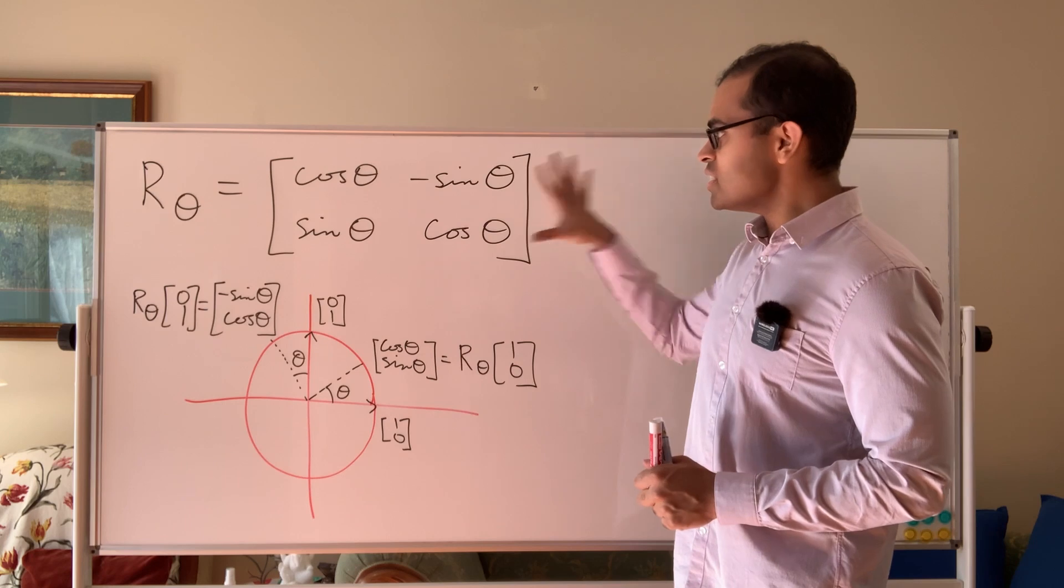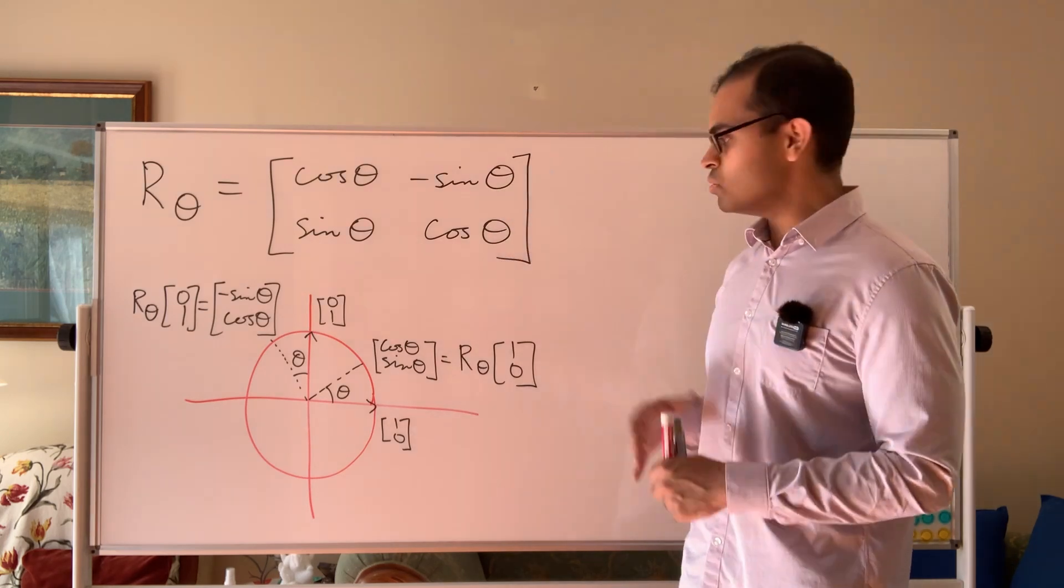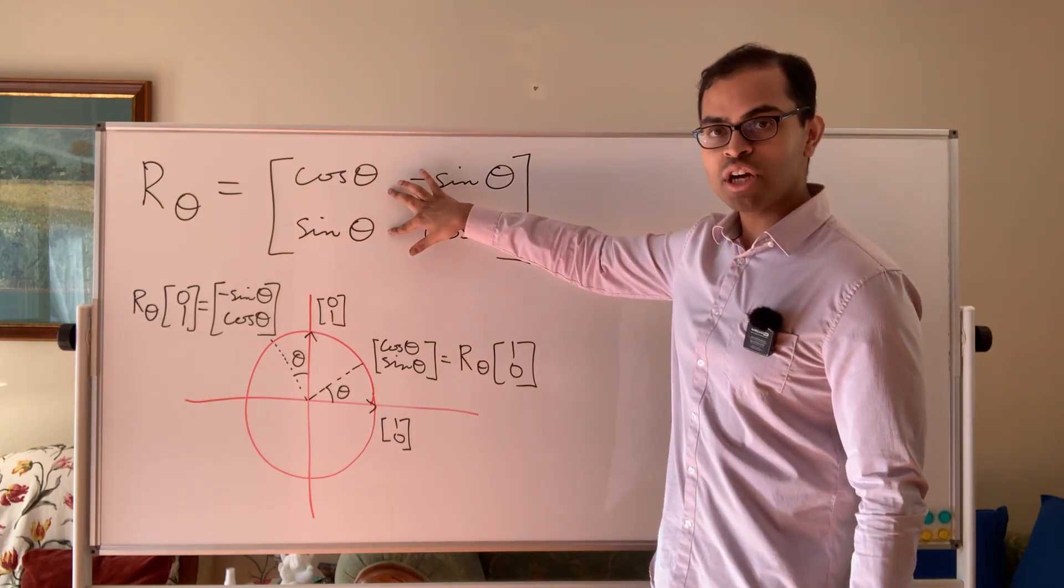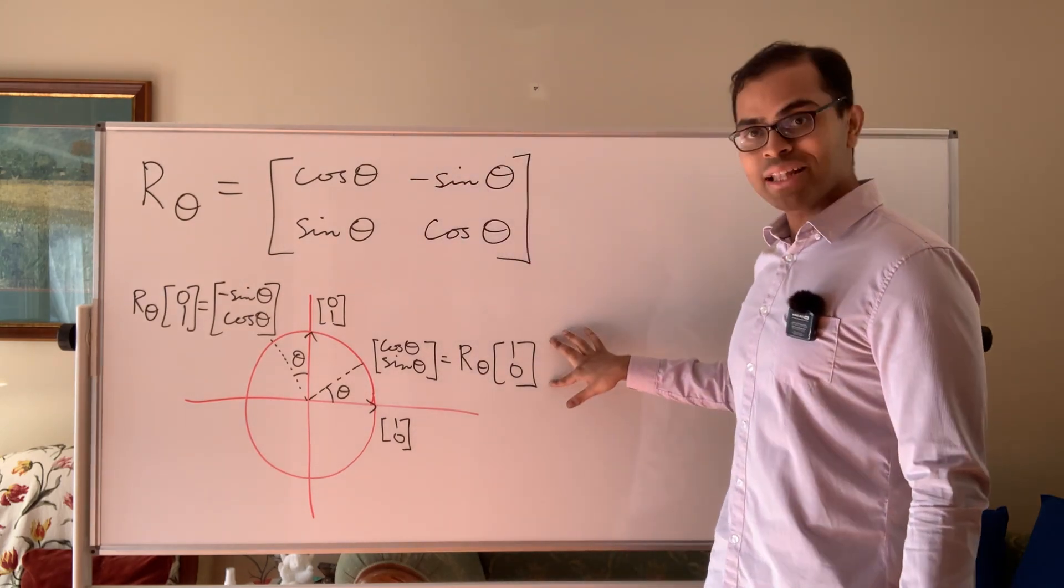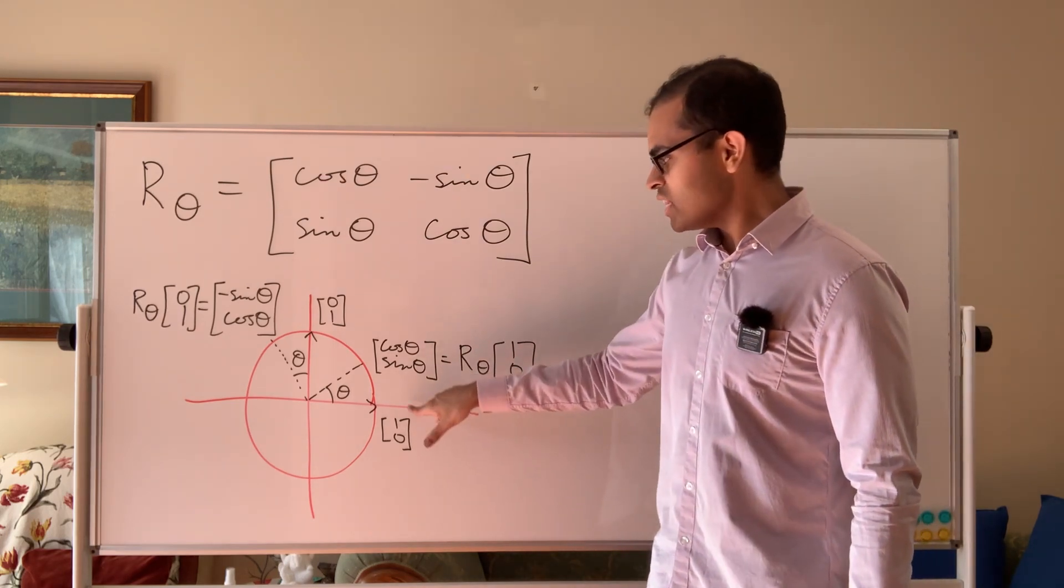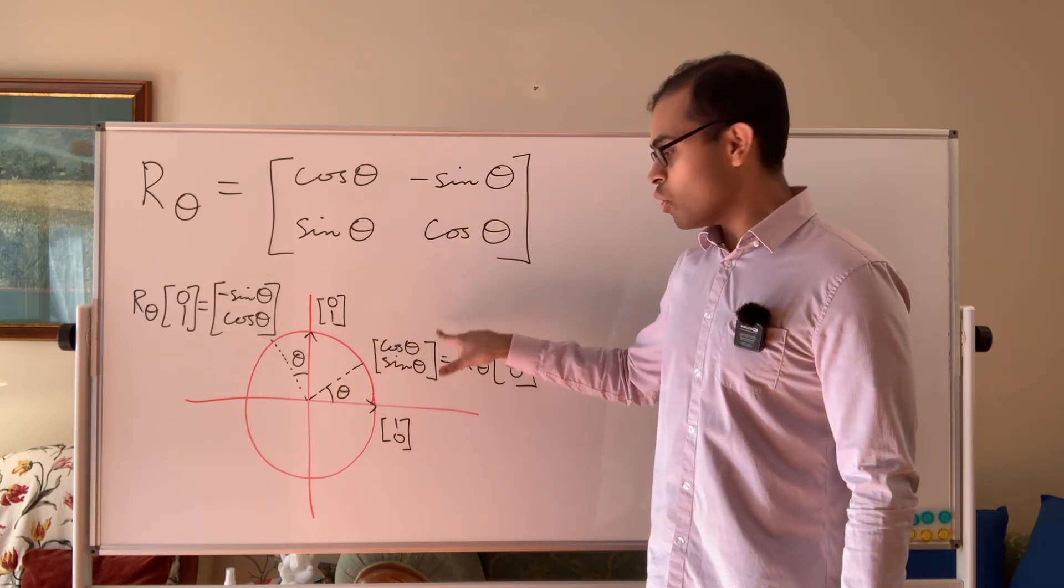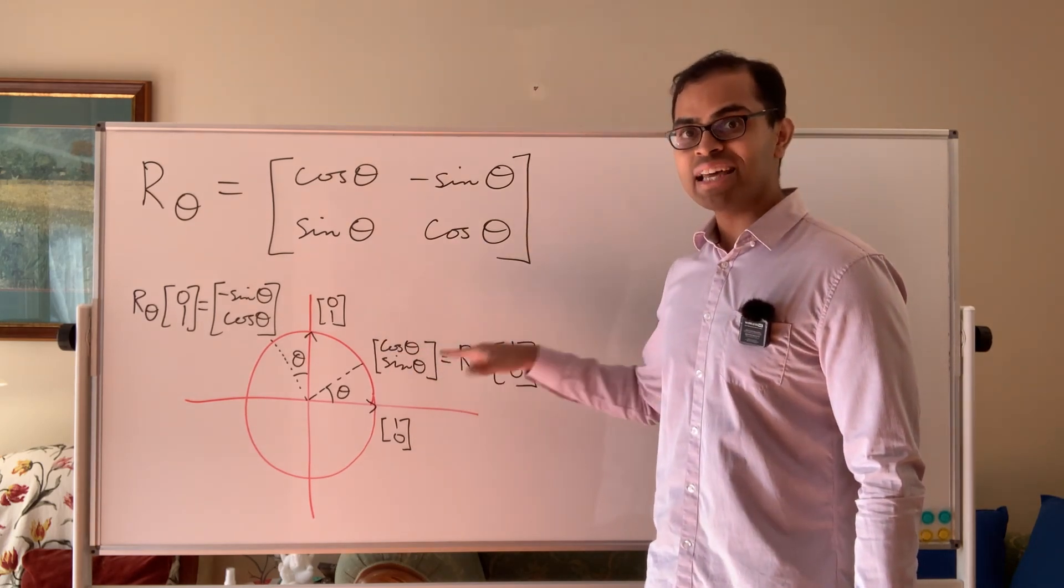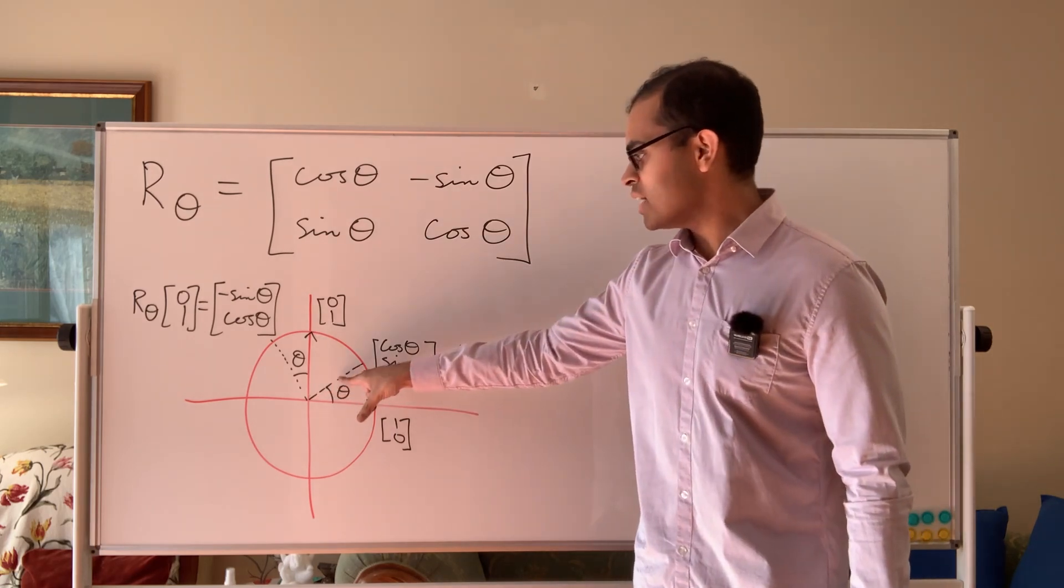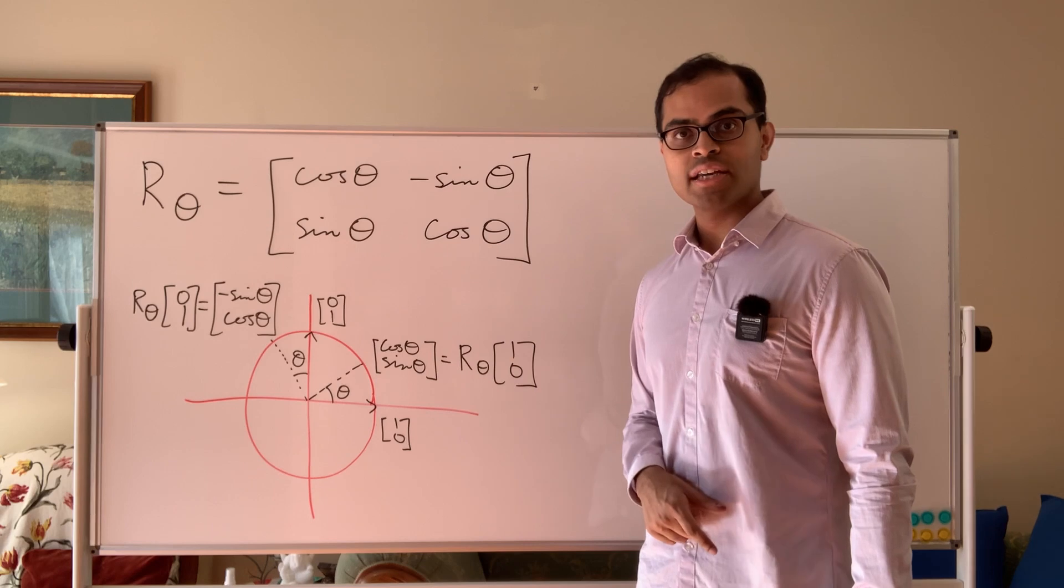Here we have the matrix of a rotation of theta degrees counterclockwise in the complex plane or in R2. The idea is that the first column of the matrix is what the transformation does to the vector 1,0, which is the first standard basis vector. We know that if you rotate that vector by theta degrees, you get a point on the unit circle whose x and y coordinates are cosine theta and sine theta respectively. That is by definition of cosine and sine. That's how they're defined because here your triangle has a hypotenuse of 1. So your x-coordinate has to be cos and your y-coordinate has to be sine.